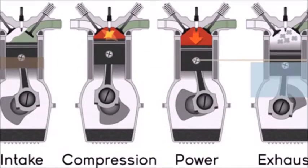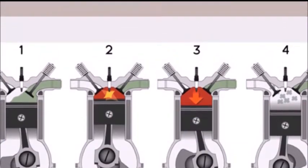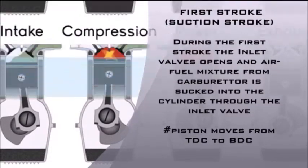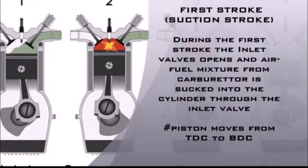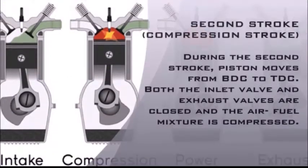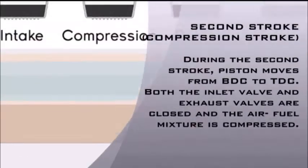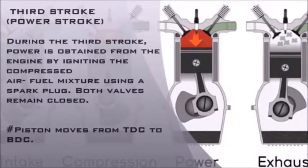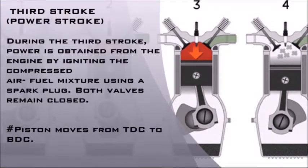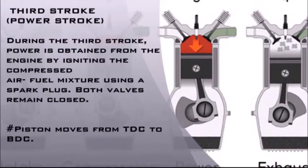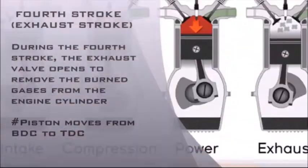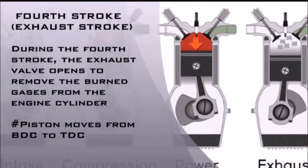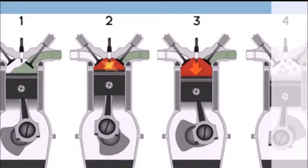Let us understand what a four-stroke engine is. As the name says, it comprises four strokes. The first is the suction stroke, during which the air-fuel mixture is sucked into the cylinder. The second is the compression stroke, during which the inlet valve closes and the piston moves from BDC to TDC. The third is the power stroke, in which the spark plug ignites the air-fuel mixture, releasing a large amount of energy. The fourth stroke is the exhaust stroke, where combustion gases exit the cylinder.